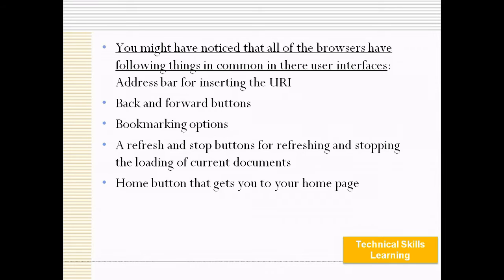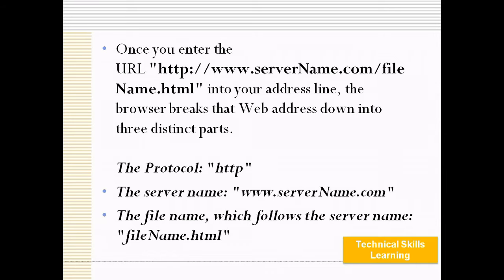Once you enter the URL into your address bar, the browser breaks the web address down into three distinct parts: first is the protocol, that is HTTP; second is the server name, such as www.servername.com; and third is the file name which follows the server name, such as filename.html.